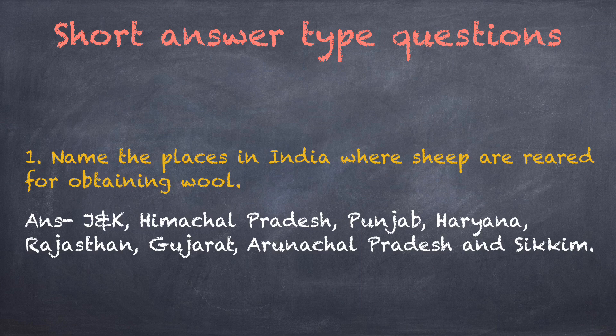Short answer type questions. First question: Name the places in India where sheep are reared for obtaining wool? Answer: Jammu Kashmir, Himachal Pradesh, Punjab, Haryana, Rajasthan, Gujarat, Arunachal Pradesh and Sikkim are the places in India where sheep are reared for obtaining wool.